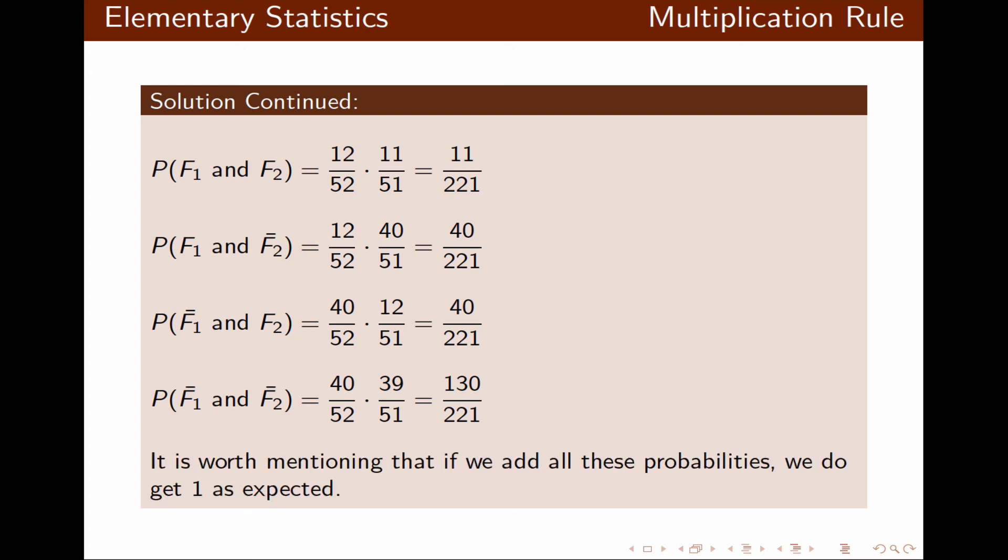It's worth mentioning that if we add all these probabilities we get 1, as expected — the sum of all probabilities must equal 1. I hope this presentation helped you understand the multiplication rule and how to use it along with the tree diagram.